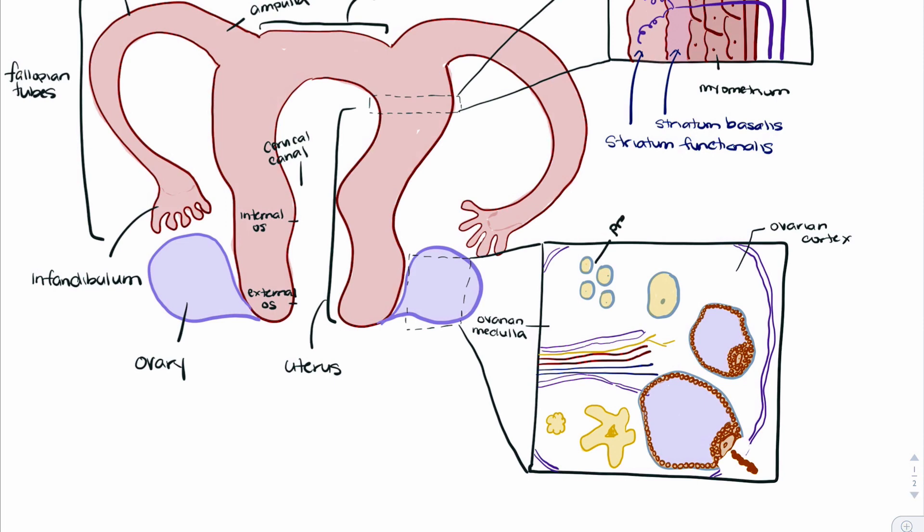So again to recap, we have our primordial follicles which are the follicles that are innate, the ones that the female is born with. They'll develop through hormonal control from follicle stimulating hormone into primary and secondary follicles, followed by a mature follicle. Generally we will only have one mature follicle within the ovary at one time, and this is the follicle that's going to release its egg during menstruation.